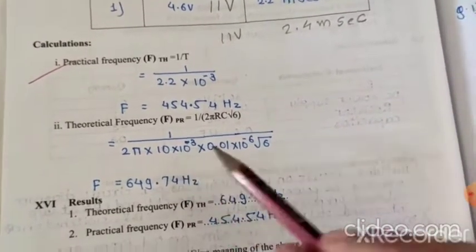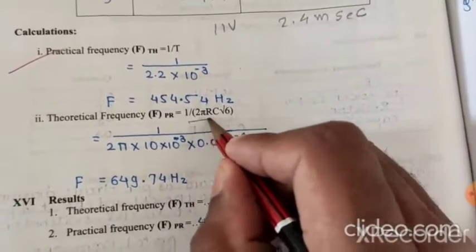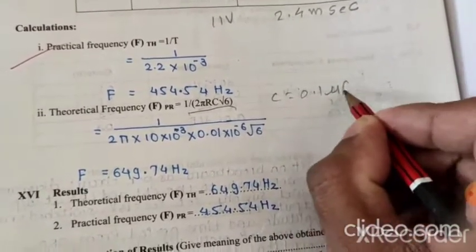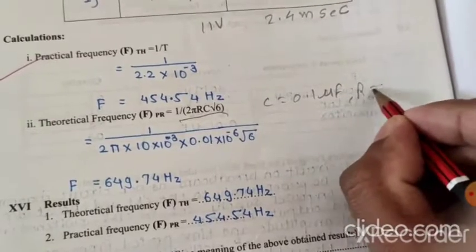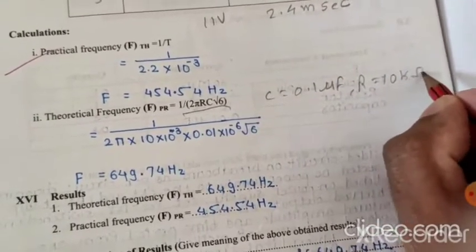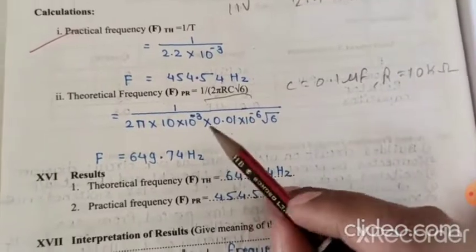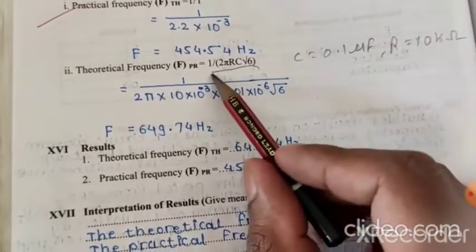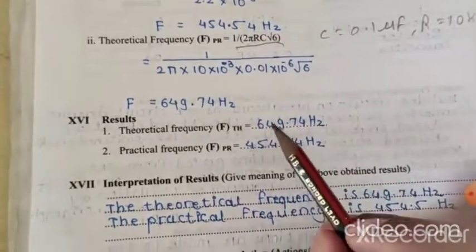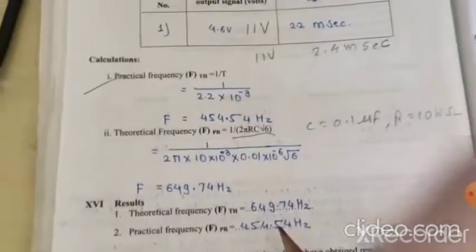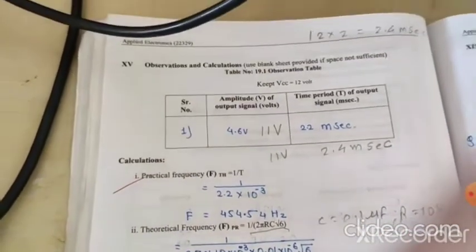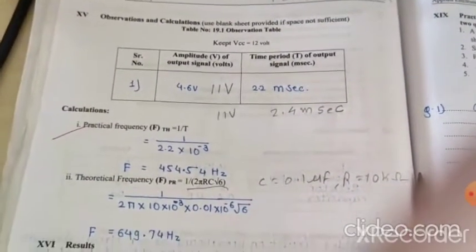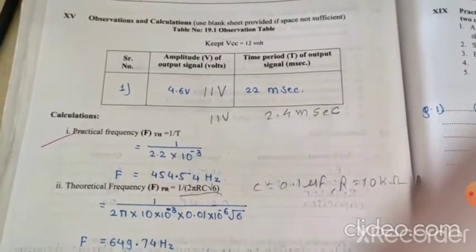The practical frequency is 416.67 Hz. The theoretical frequency formula is 1 upon 2πRC√6. The C value is 0.1 microfarad and R value is 10 kilo ohm. Using these values, the theoretical frequency result is 649 Hz. You have to write down both the theoretical and practical frequency values. I hope you have understood the concept of the RC phase shift oscillator. Thank you.